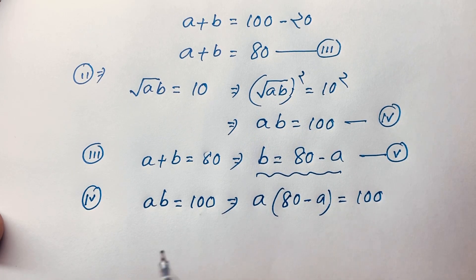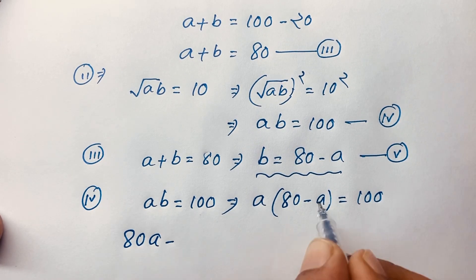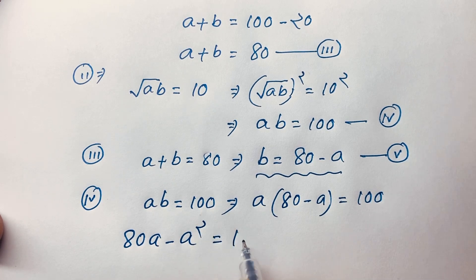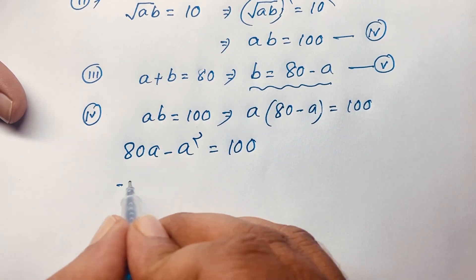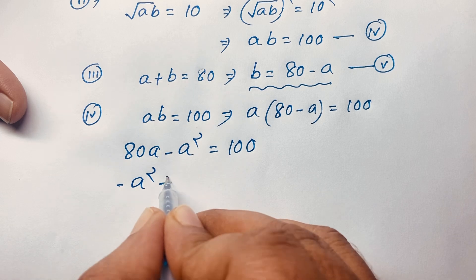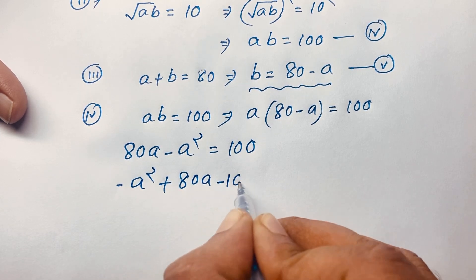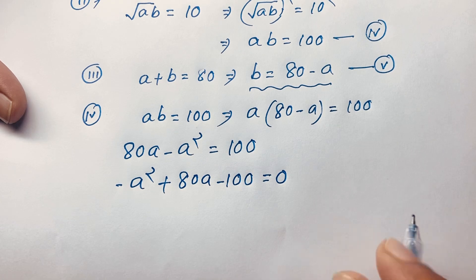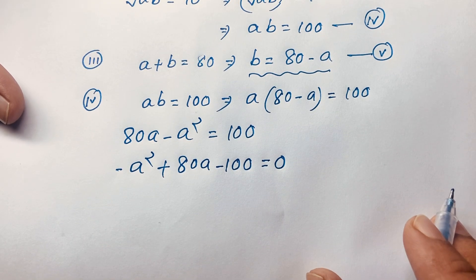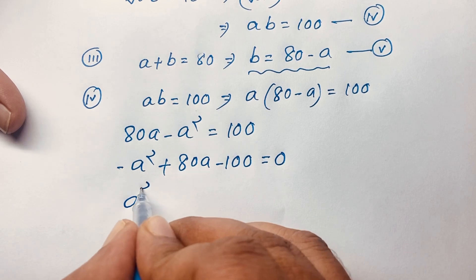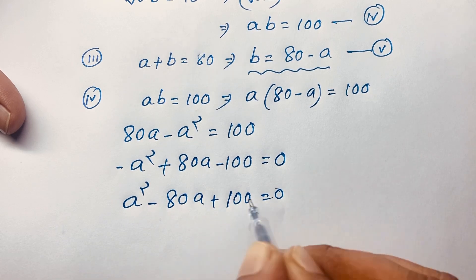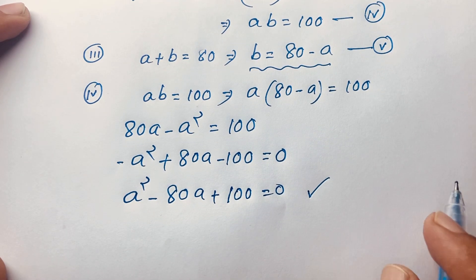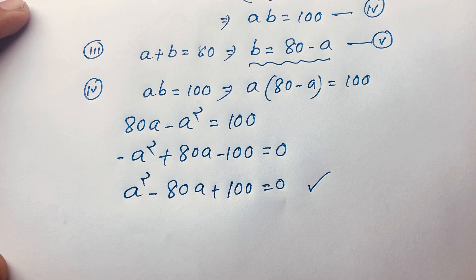Expanding: 80a minus a² equals 100. Rearranging: negative a² plus 80a minus 100 equals 0. Multiplying both sides by negative 1, we get the quadratic equation: a² minus 80a plus 100 equals 0.